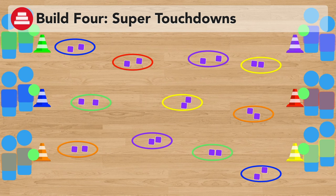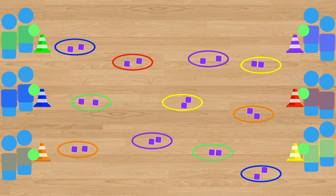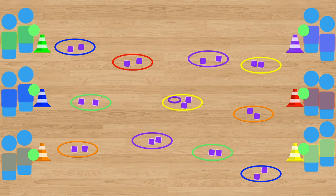Build four is super Touchdowns. Now you can play this build in all kinds of different ways, but basically the way that I like to play it is I like to add a whole variety of objects to the game and assign different amounts of points to each object. For example, rubber rings, well they could be worth three points. Whereas, a thin pin, well that could be worth five points.